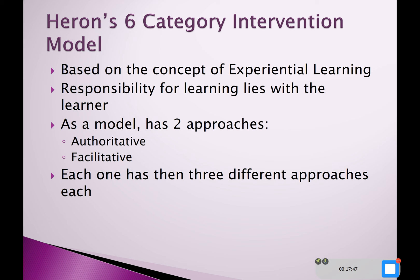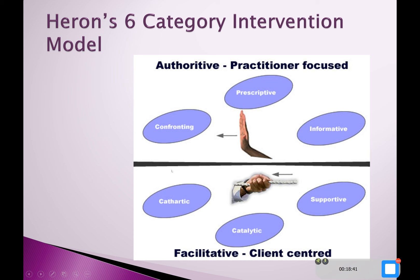As a model, the Six Category Intervention has two different approaches. There are six categories divided into two groups: authoritative categories and facilitative categories. The next couple of slides go into a little bit more detail. The authoritative approaches — confronting, prescriptive, and informative — are more driven and led by the teacher, and not something you'd typically want to be doing as a facilitator, though sometimes you might have to confront behavior.